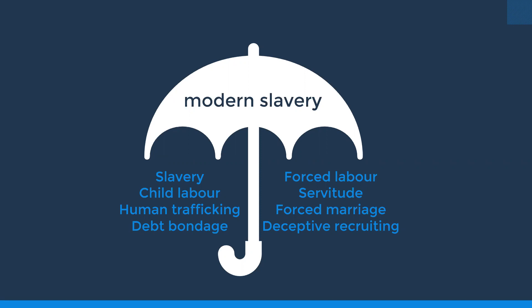The worst forms of child labour involve hazardous work affecting a child's health, safety and development. Not all work done by children is classified as child labour — where children work in agricultural communities or on their parents' farms, that's not necessarily modern slavery. Human trafficking refers to the forced movement of people using violence, threats or deception for the purposes of exploitation. If the victim is a child, it is enough that the child is trafficked and exploited for someone else's gain. People may be moved within a region, within a country, or across borders.